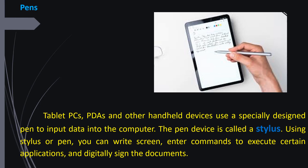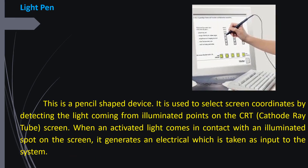The light pen is also a handheld input device. It is a pencil-shaped device used to select screen coordinates by detecting light coming from illuminated points on a CRT, that is a cathode ray tube screen. When an activated light comes in contact with an illuminated spot on the screen, it generates an electrical signal which is taken as an input to the system.